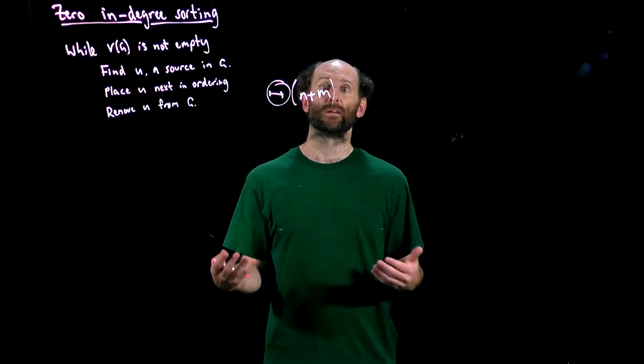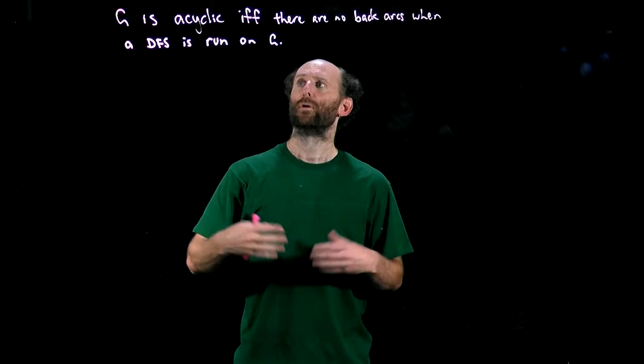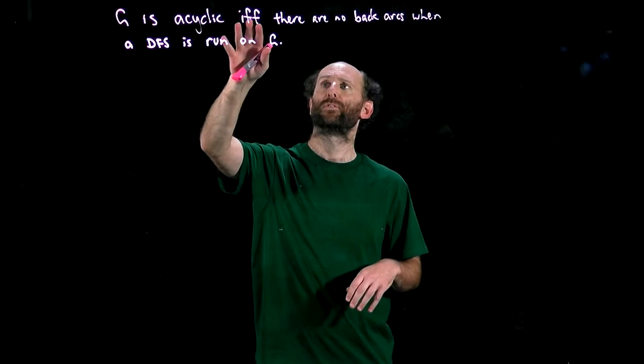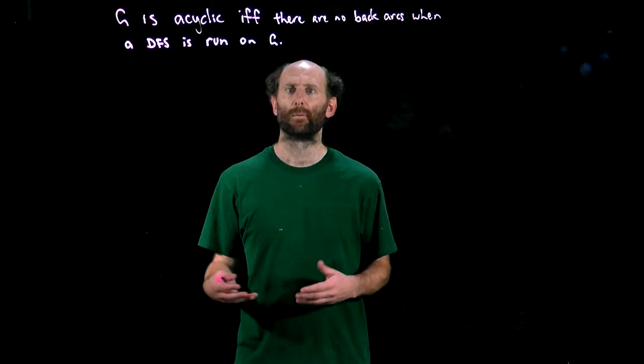So let's look at a couple of results now to see how this is done. First we'll prove this result here that G is acyclic if and only if there are no back arcs when a DFS is run on G. Suppose we've then performed a DFS on G and we found some back arc uv.